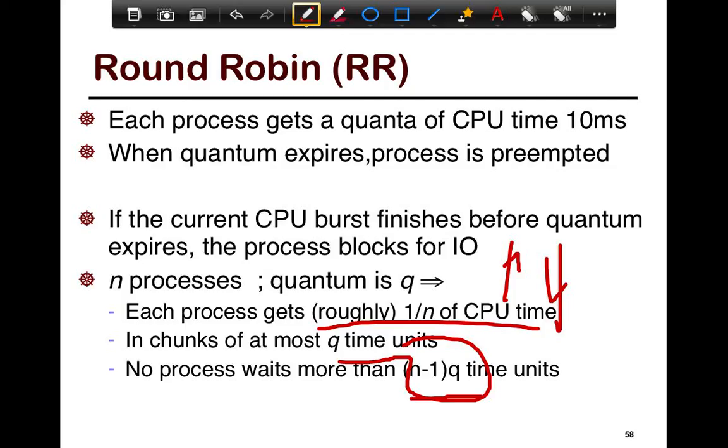then each one of them would be scheduled for Q time units, a single quantum, and when N minus 1 of them are done, then you would definitely have time on the CPU. So, at most, you would wait for N minus 1 times Q.